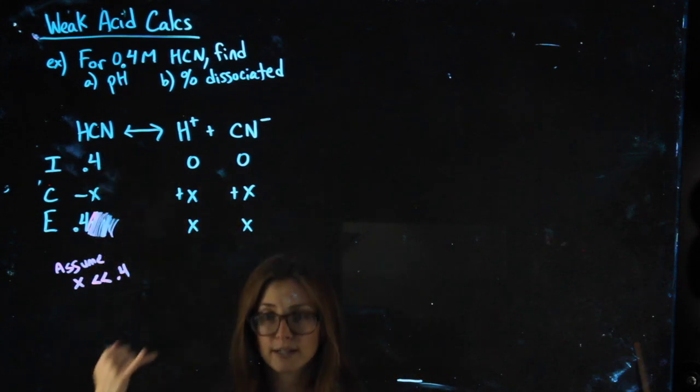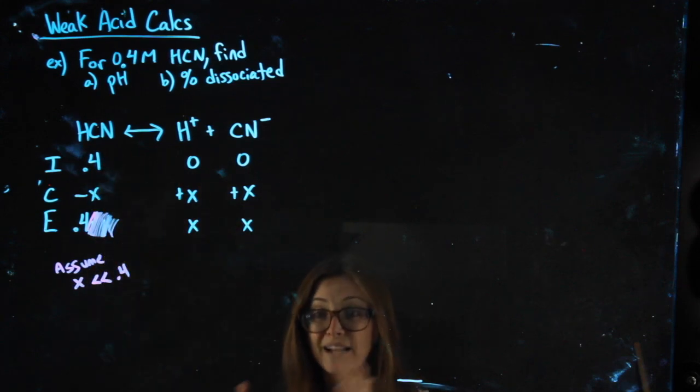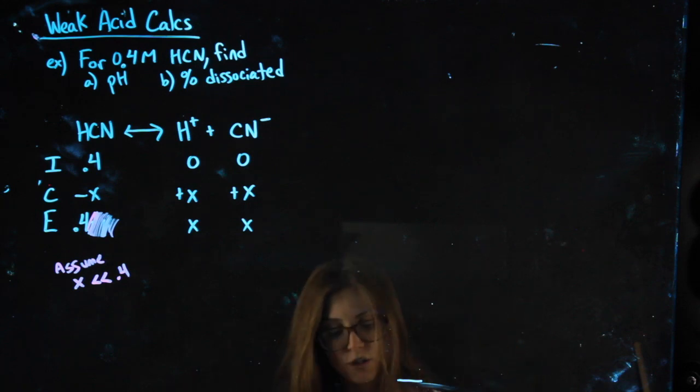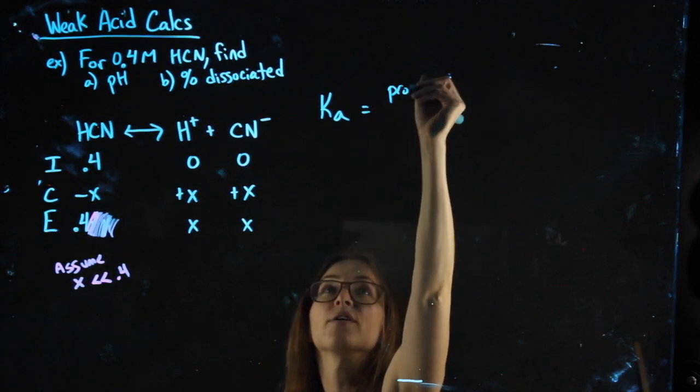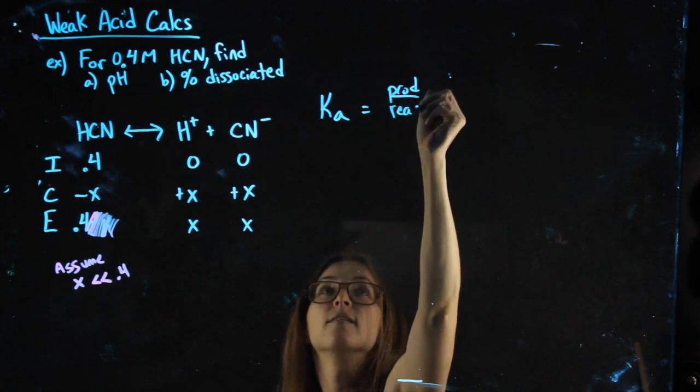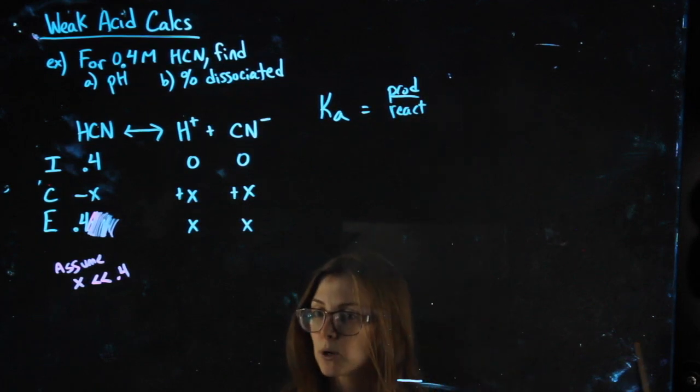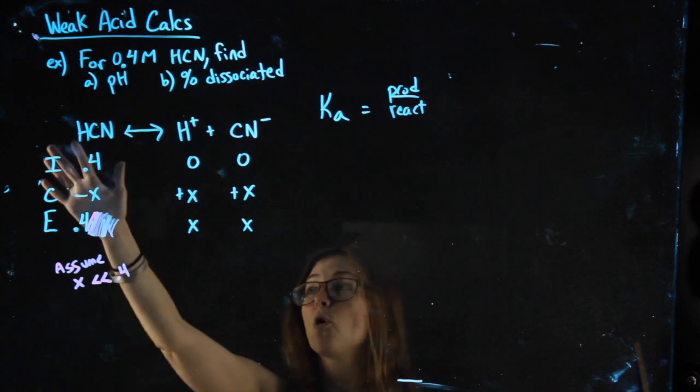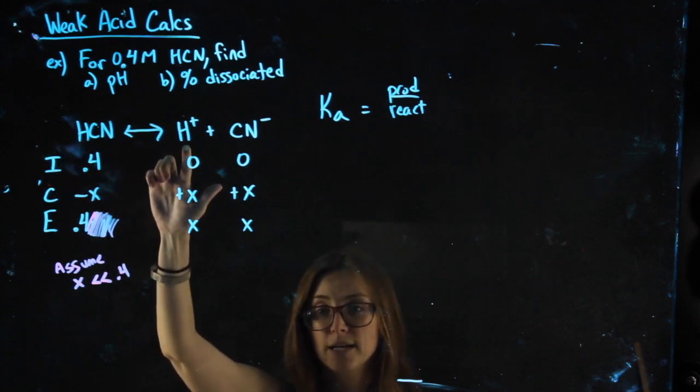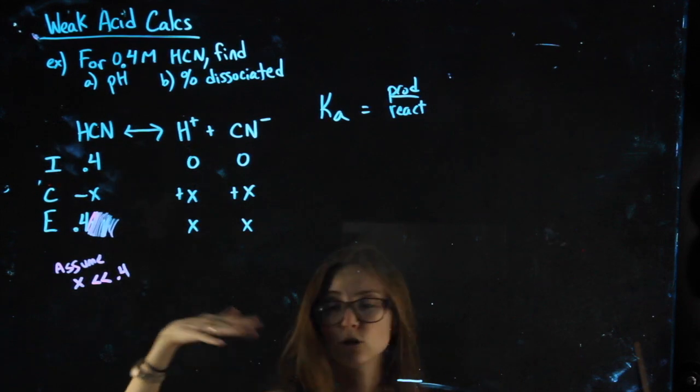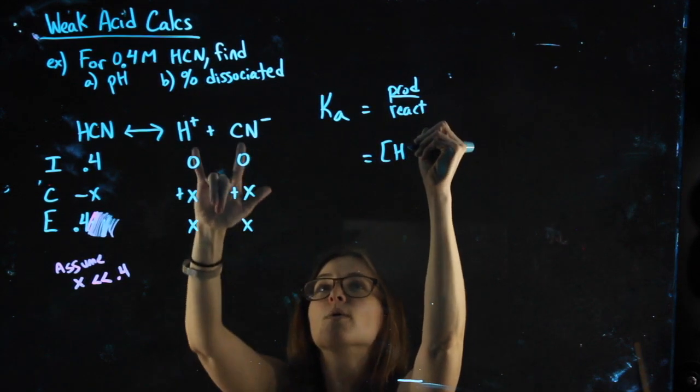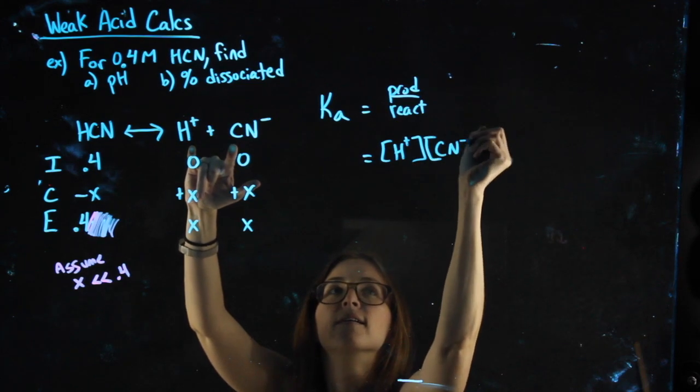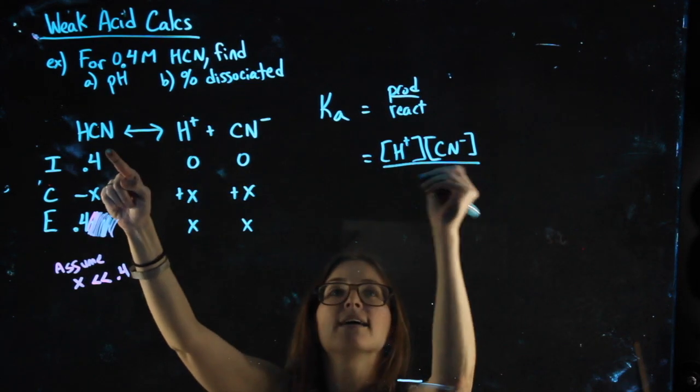Okay, so we did a dissociation. We did an ICE chart. If you remember, something else we can always do is like a K expression. For acids, though, it'll be a Ka expression, where we do products over reactants. Coefficients become exponents, but you're actually never going to have coefficients because you're only taking away an H+. You're just separating it, so you should have no coefficients. Setting that up, my products are always the right-hand side over my reactants.